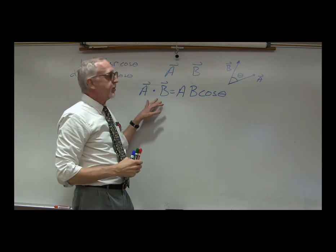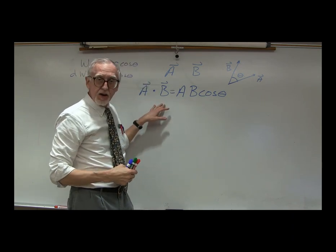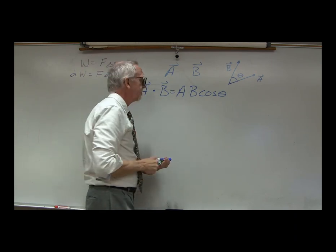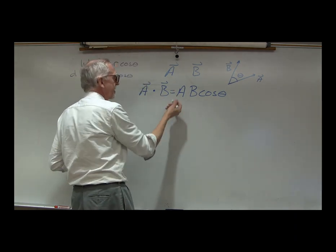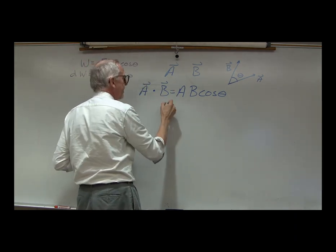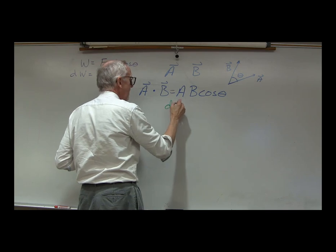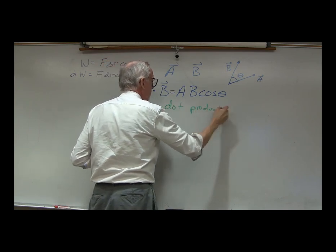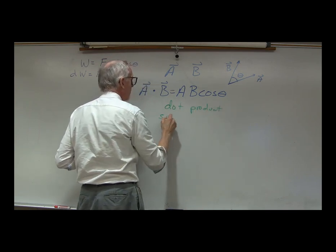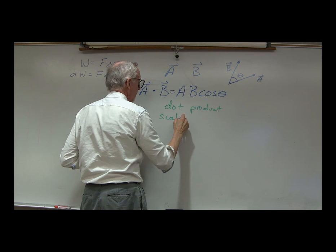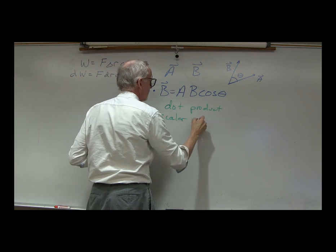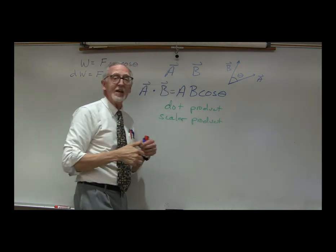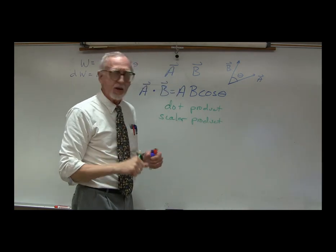This combination — A·B = AB·cosθ — is called the scalar product or the dot product. You can use those interchangeably; they mean the same thing.